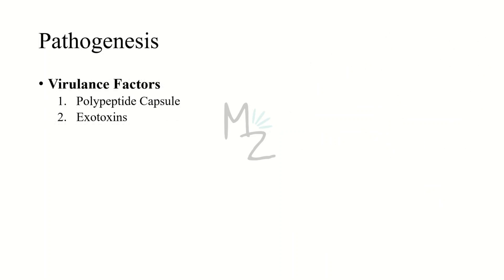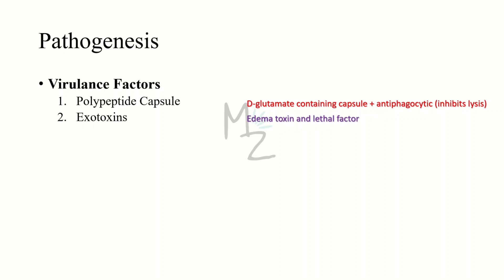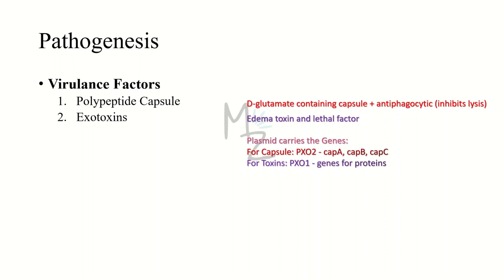Pathogenesis: let's start with virulence factors. The first is the polypeptide capsule — an amino acid capsule unique to Bacillus anthracis — with a D-glutamate-containing capsule that is anti-phagocytic, inhibiting the lysis type of phagocytosis. The second is the exotoxin: this bacterium has an edema factor and a lethal factor, with separate genes carried on plasmids. Plasmid PXO2 synthesizes CAPA, CAPB, and CAPC genes responsible for forming the capsule. Plasmid PXO1 is responsible for making genes for the proteins of the edema toxin and lethal factor.